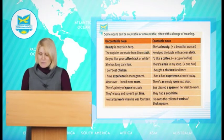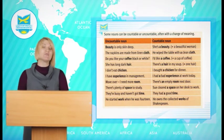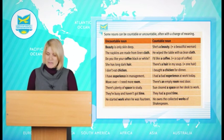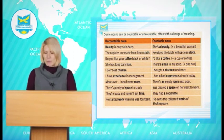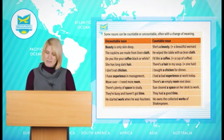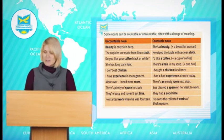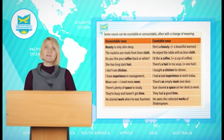Some nouns can be countable or uncountable, often with a change of meaning. For example: 'Beauty is only skin deep' — here 'beauty' is an uncountable noun. And: 'She is a beauty' — in this sentence, 'beauty' is countable.